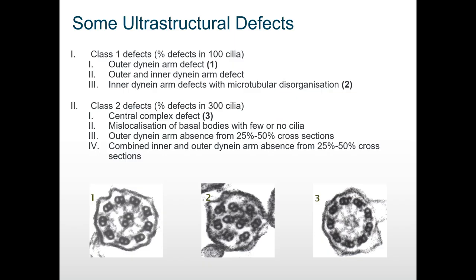Here are some of the more common ultrastructural defects seen in patients with PCD. In picture one, we have an absence of outer dynein arms — there's an empty space where the dynein arm should be, and in a patient with this defect the cilia wouldn't move properly, perhaps moving a little but not to their full extent. In picture two, we have inner dynein arm defect with microtubular disorganisation — it has completely lost its nine-plus-two structure and the inner dynein arms are missing from the microtubules.